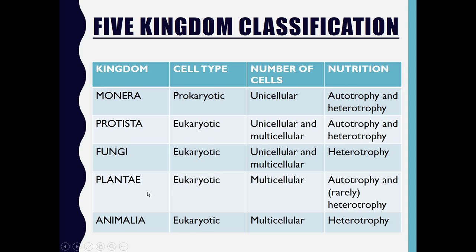The fourth kingdom, Plantae: all organisms here are eukaryotic, they are multicellular, and they are almost entirely autotrophic — very rarely heterotrophic as well.